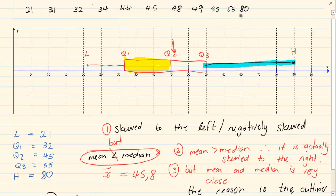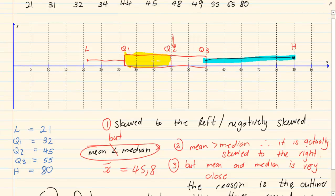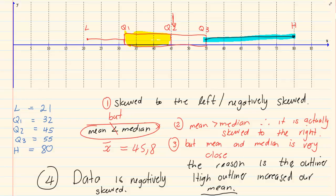If we were to take out 80, our entire data would shift. So, one outliner completely moves our data.